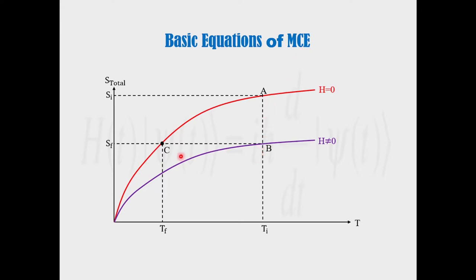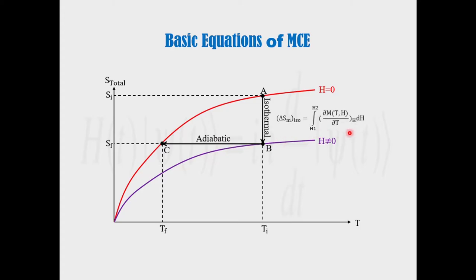The basic equation of the magnetocaloric effect. The magnetocaloric effect consists of two processes: the isothermal process followed by an adiabatic process. The isothermal process can be calculated by this integration, while the adiabatic process can be calculated by this integration. Both integrations can be performed using Mathematica code.